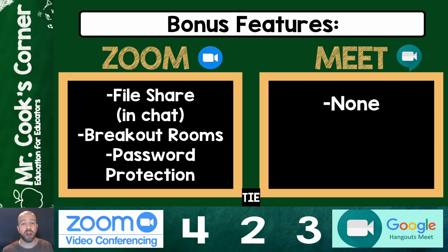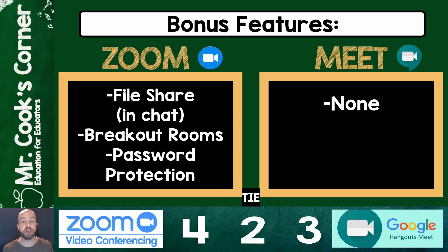This last one is kind of the knockout blow for Zoom — the bonus features. Google Meet doesn't have any, but Zoom has a couple cool things. It can file share in chat, so you can include actual files. They also have the really cool ability to take a large group and break them up into smaller groups via breakout rooms. So if I have 50 people and I want groups of five to discuss something, I can set that up — they'll be sent out of the main room into small groups, then come back and reconvene. Also, perhaps most importantly, is the ability to password protect a room, which is a really big step especially given all the reports of virtual hacking where people are entering rooms and being inappropriate. It's just another layer of protection.